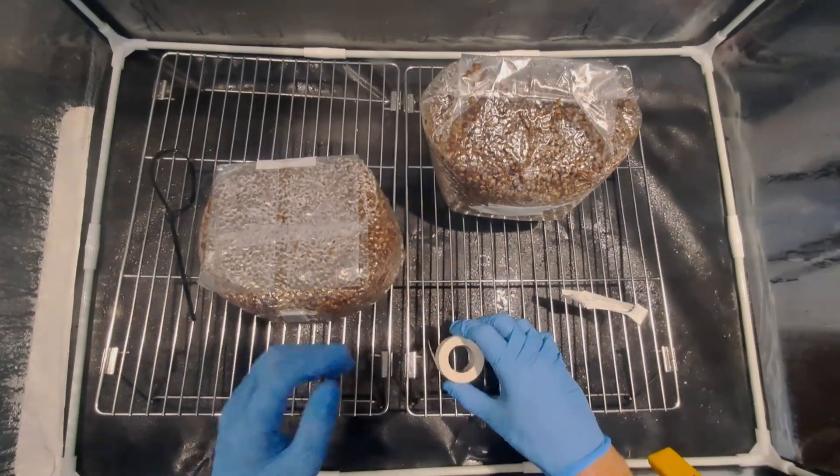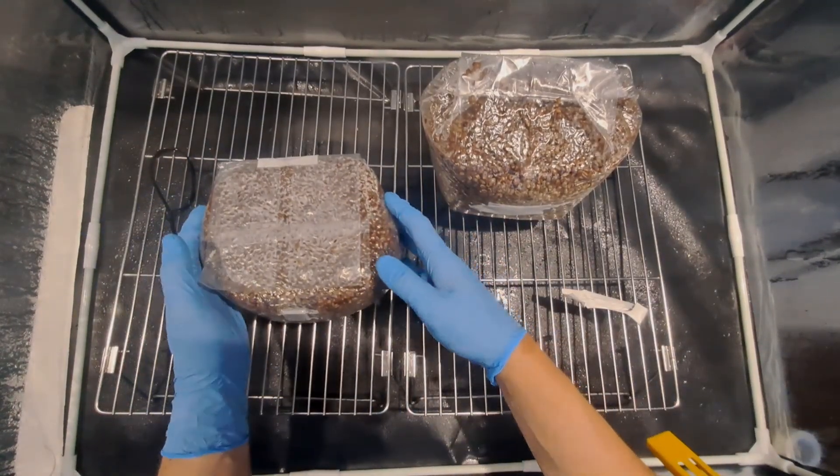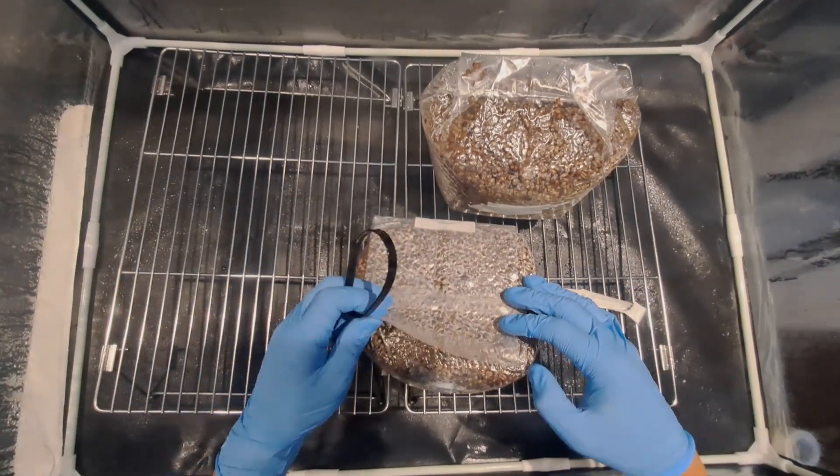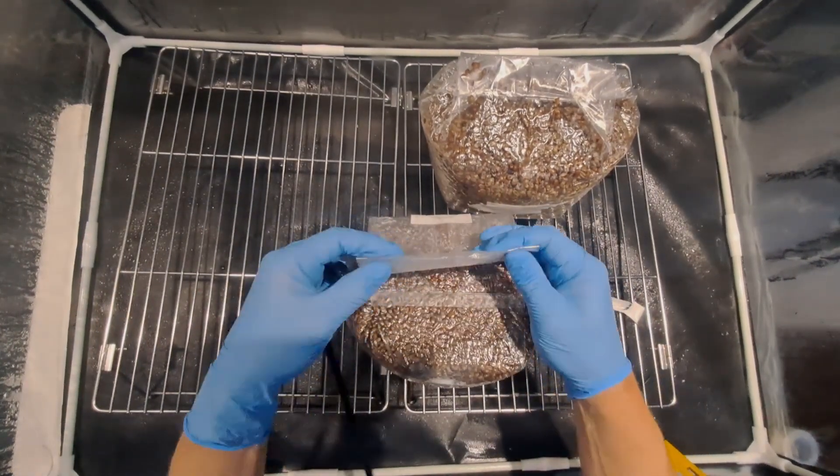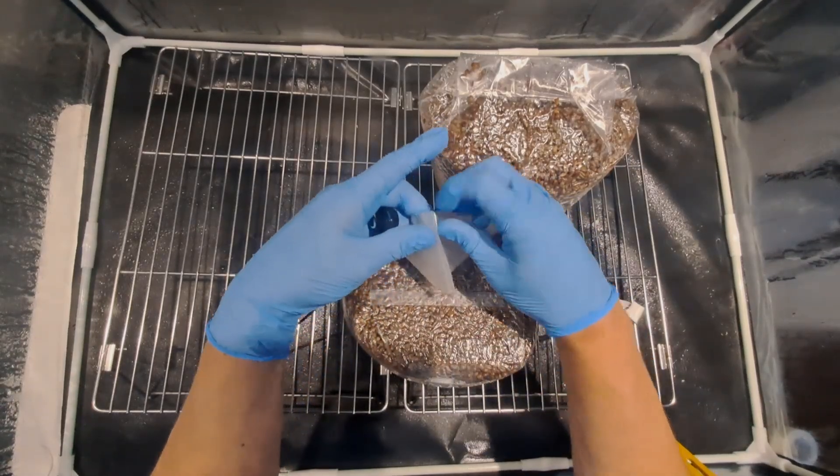Now that all of the inoculations are complete I'm going to seal the bags using a reusable zip tie. To do this I fold the bag down and then in half and then tighten the zip tie. This seals the top of the bag leaving no tiny spaces or anything.